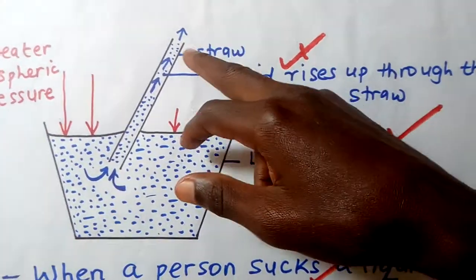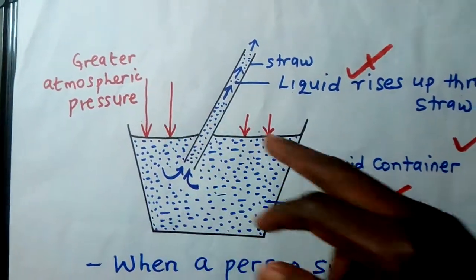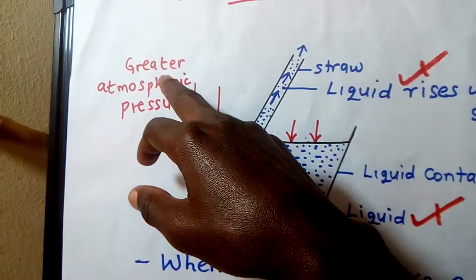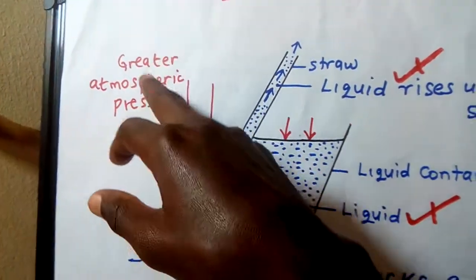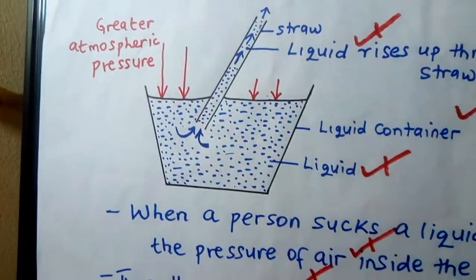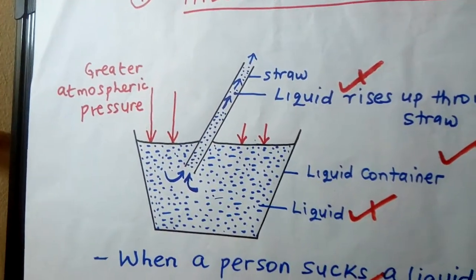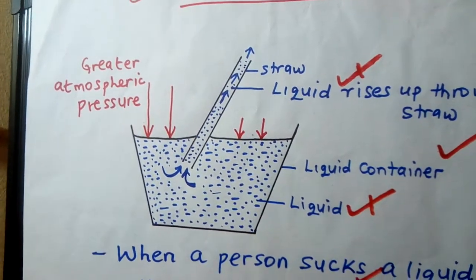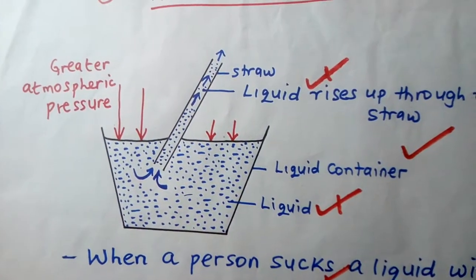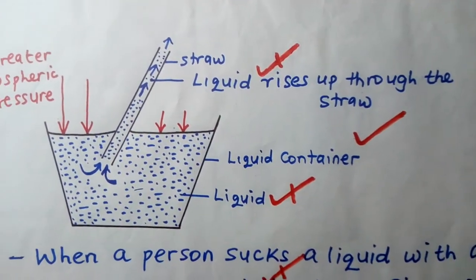To summarize: the liquid rises up through the straw, the straw is inside a container of liquid, and atmospheric pressure acts externally. The external pressure is greater because the pressure inside becomes less when you suck. So if someone asks you to explain how a drinking straw helps a person take in soda easily, they are asking about the application of atmospheric pressure.